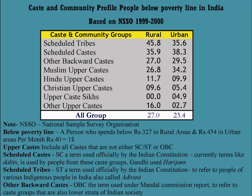The 82nd Amendment inserted a provision in Article 335 to enable states to give concessions to SC and ST candidates in promotion. The validity of all the above four amendments was challenged in the Supreme Court through various petitions clubbed together in M. Nagaraj and others vs. Union of India and others, mainly on the ground that these altered the basic structure of the Constitution.